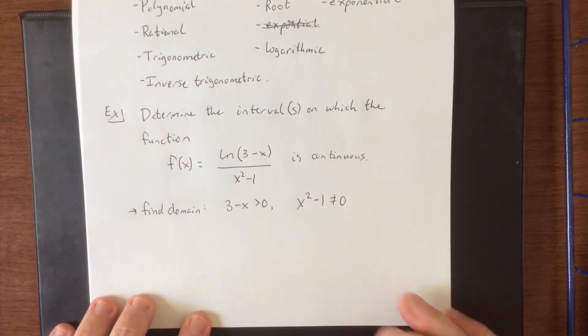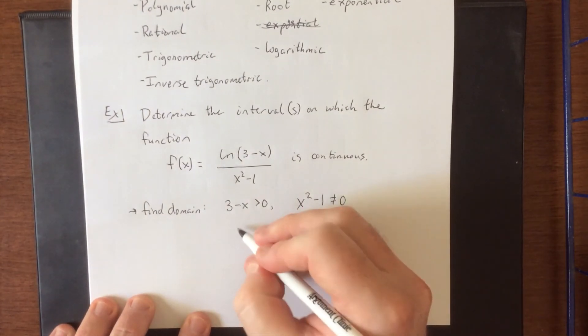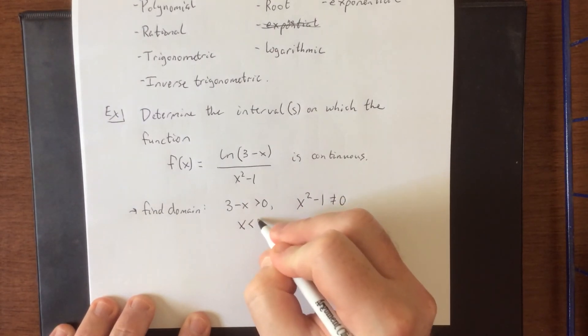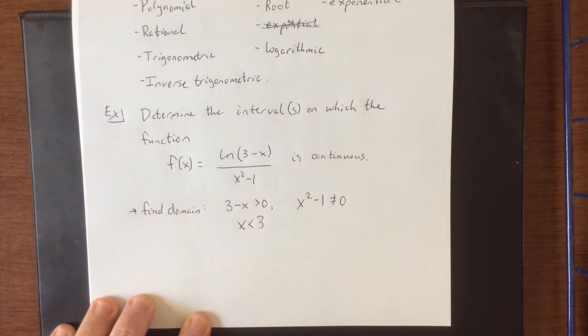Solving these using a little bit of algebra, we can add an x to both sides and then flip the inequality around. Let's say that x is less than 3.